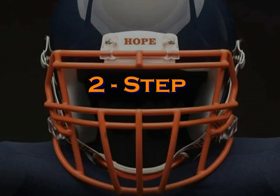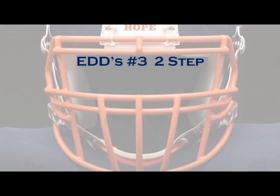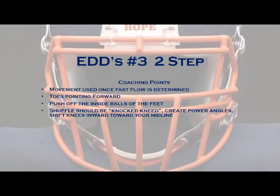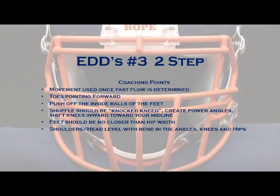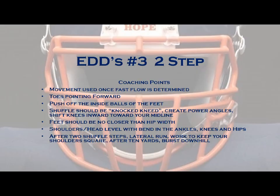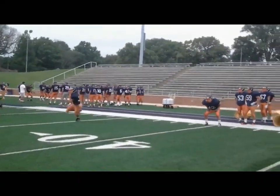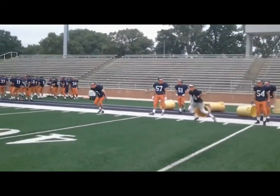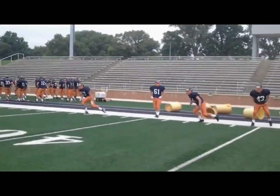The next movement in our everyday drills is known as Two-Step. This movement is used once fast flow is determined. We work the same coaching points — toes forward, inside balls of feet, feet no closer than hip width, shoulders and head level with good bend in ankles, knees, and hips. After two shuffle steps, we will lateral run, keeping our shoulders square throughout the movement, and then after 10 yards, plant and burst downhill. I use this drill to determine our player's ability to transition from a shuffle to a lateral run while maintaining square shoulders, as well as the ability to transition and burst towards the line of scrimmage.